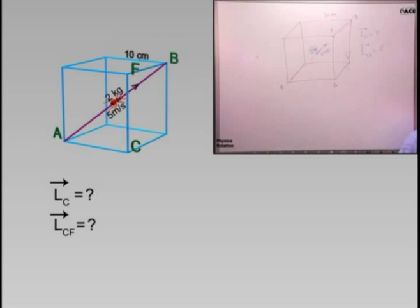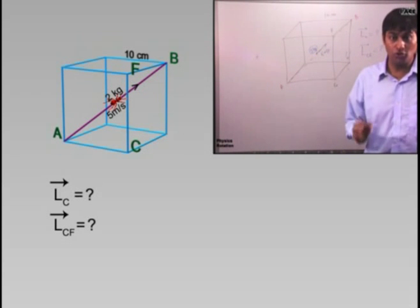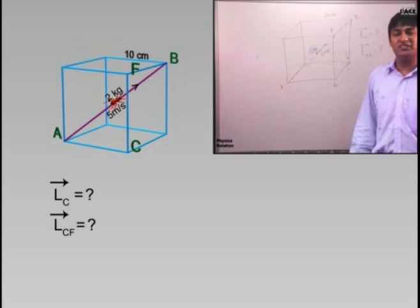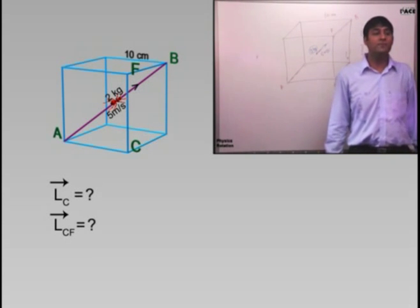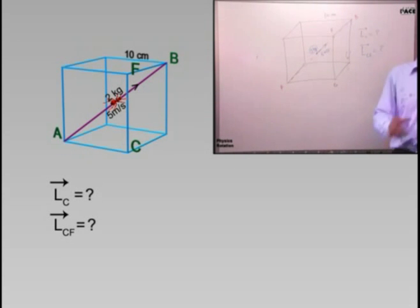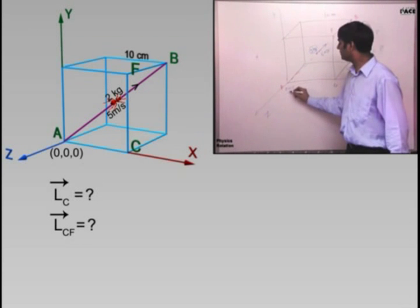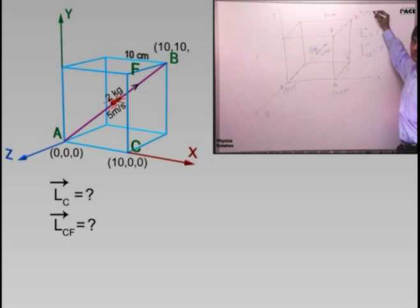Let C be the origin. This means x-axis, y-axis, and z-axis. So the coordinate of A is (0, 0, 0). The coordinate of C is (10, 0, 0). The coordinate of B is (10, 10, 0). Now, vector AB = position vector of B minus position vector of A = 10î + 10ĵ − 10k̂. The unit vector along AB is (10î + 10ĵ − 10k̂) / (10√3) = (1/√3)(î + ĵ − k̂).